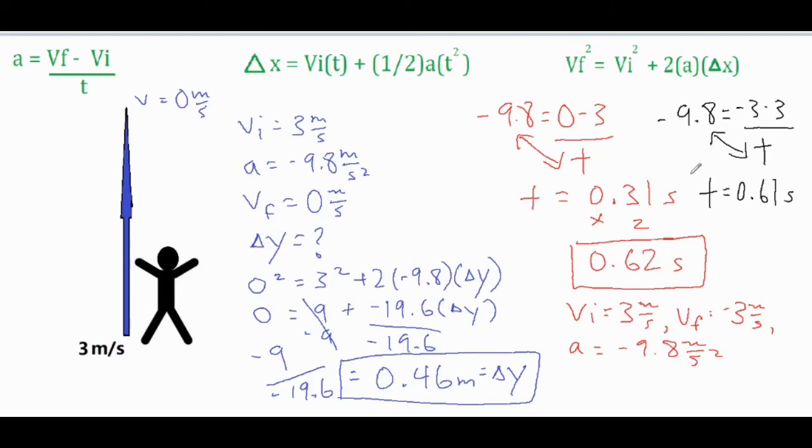Then I get a final time of 0.61 seconds, which is slightly different than my 0.62. The reason why there's a slight difference is because I rounded off this 0.31. So after I multiply it by two, it became out slightly higher.